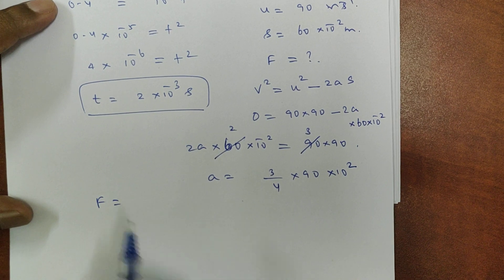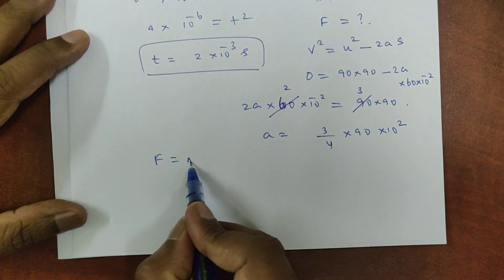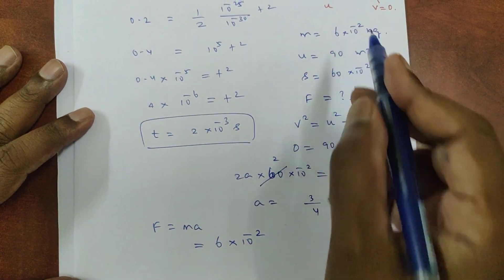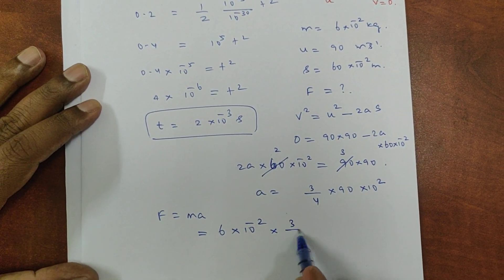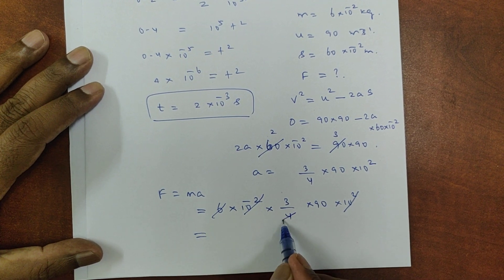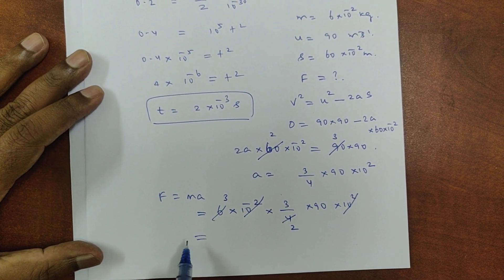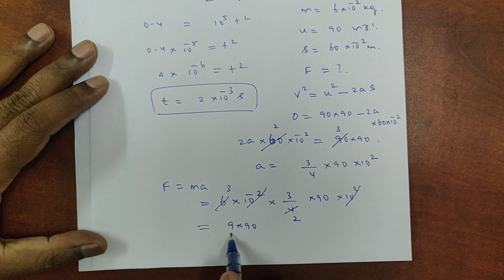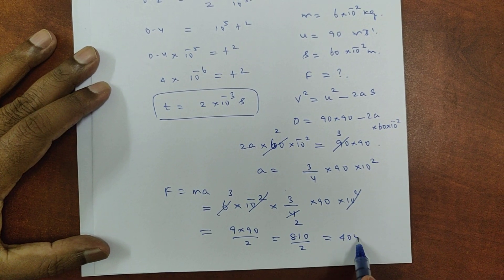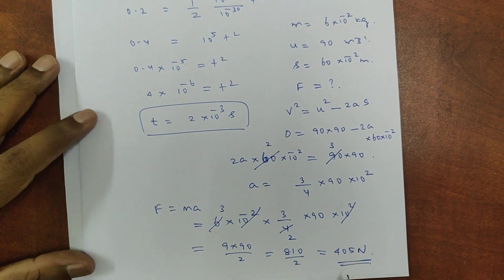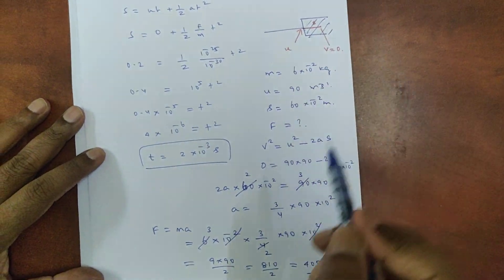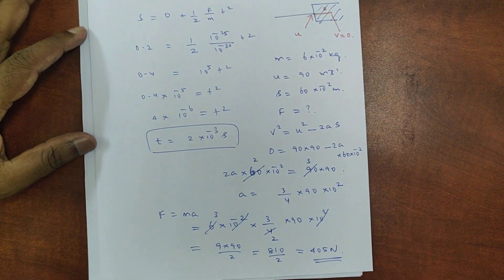Force equals mass into acceleration. Mass of the bullet is 6 × 10^-2 kg, and acceleration is (3/4) × 90 × 10^2. So force = 6 × 10^-2 × (3/4) × 90 × 10^2. This gives the resistive force acting on the bullet due to the wooden block as equal to 405 newton.